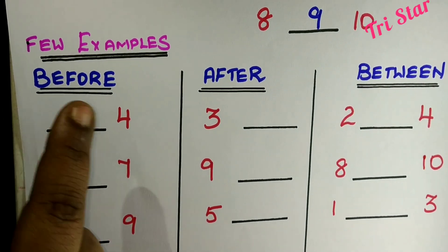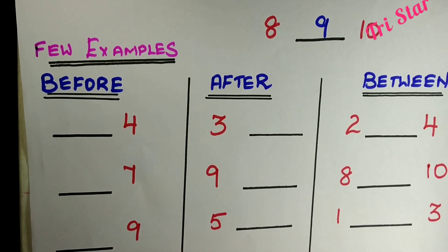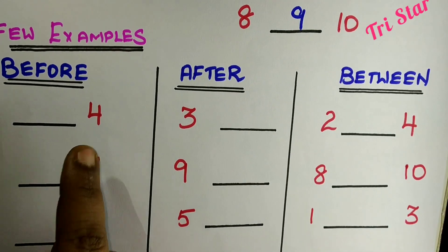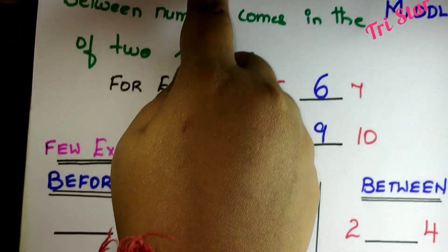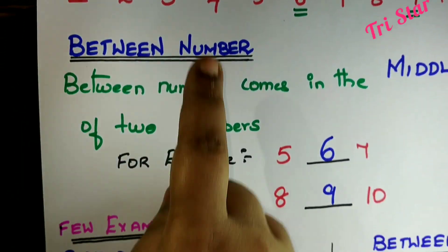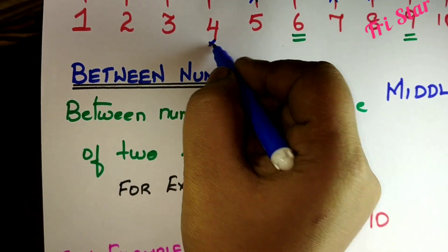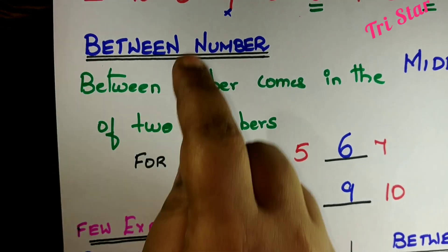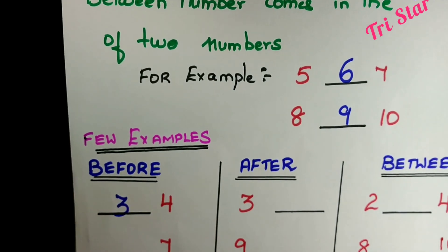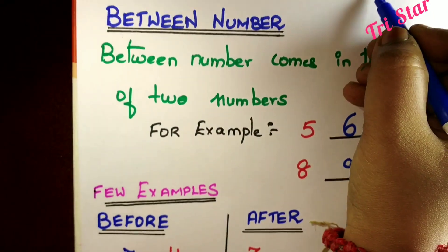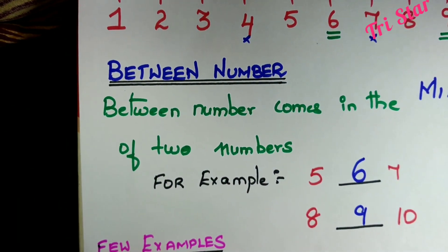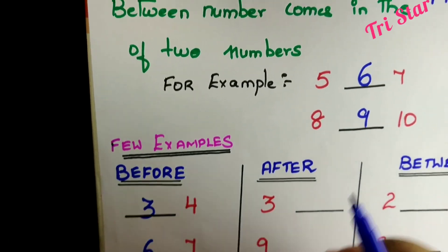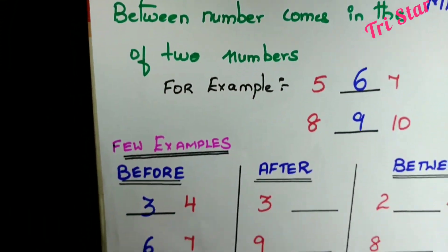Now let us look at a few examples of before, after, and between numbers from 1 to 10. First, before numbers: what comes before 4? It is 3. What comes before 7? It is 6. Next example: 9 is given — what comes before 9? It is 8.